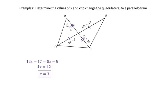Pause the video and try to solve for y. Solving for y, we follow the same process — we want AC to be bisected. So 5y plus 8 equals 4y plus 10. Subtracting 4y and subtracting 8 from both sides gives y equals 2. Both answers are boxed. Make sure you have all the pictures and all the examples in your notes, and I will see you in class.